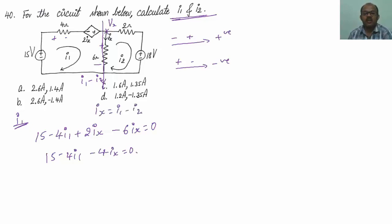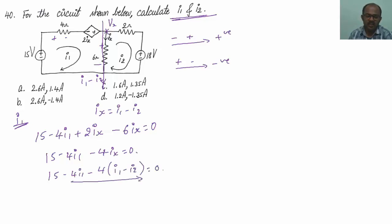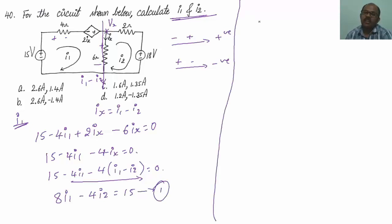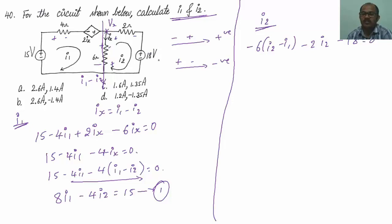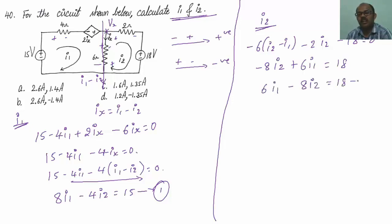Since Ix equals I1 minus I2, substituting gives: 15 minus 4I1 minus 4(I1 minus I2) equals 0. Rearranging: 8 times of I1 minus 4 times of I2 equals 15 — call it equation 1. Applying KVL for the loop I2: minus 6(I2 minus I1) minus 2I2 minus 18 equals 0, which gives 6I1 minus 8I2 equals 18 — call it equation 2.